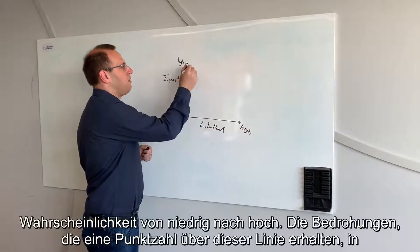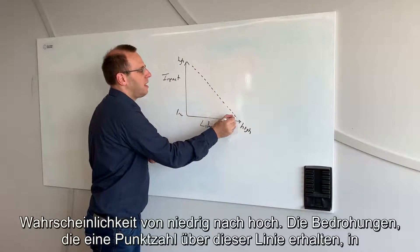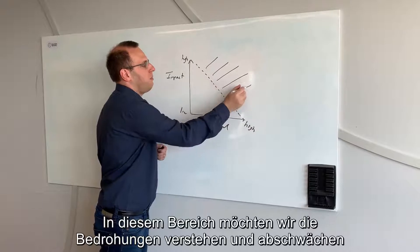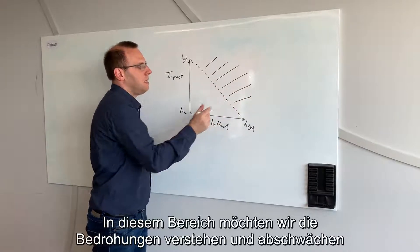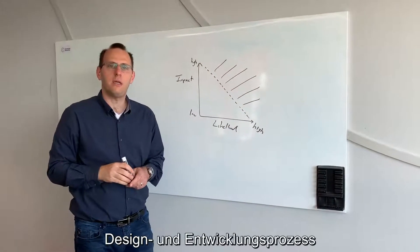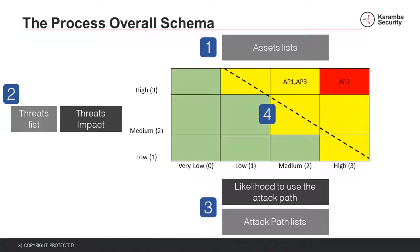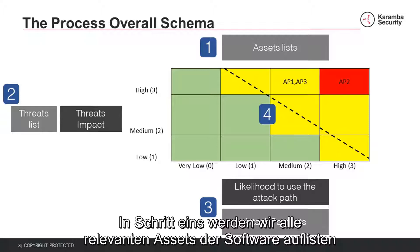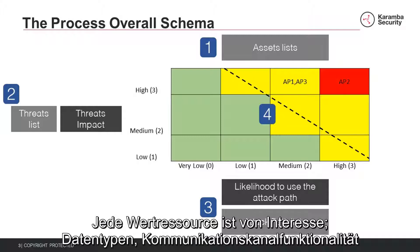The threats that get a score above this line, in this area, are the threats we want to understand and mitigate during our design and development process. The TARA process contains four phases. In step one, we will list all the relevant assets of the software — any resource or value of interest: data types, communication channels, functionality.